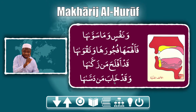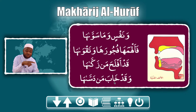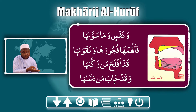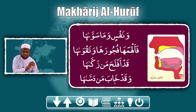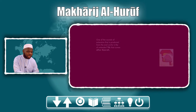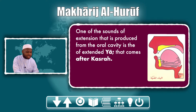When the letter you are extending is a heavy letter — ho, to, bo — the extension must also follow it from beginning to end. You may need to extend it two points, or four to five points. If you have al-mad al-muttasil or al-munfasil, you may need to extend it four to five points. If you have al-mad al-lazim, you may extend it six points.